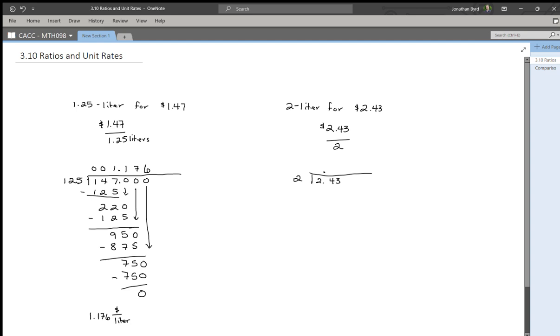Two goes into 2 one time. One times 2 is 2. Subtract and get zero. Bring down the 4. Okay. Two goes into 4 two times. Two times 2 is 4. Subtract and I get zero. Bring down the 3. And 3. No. Two goes into 3...